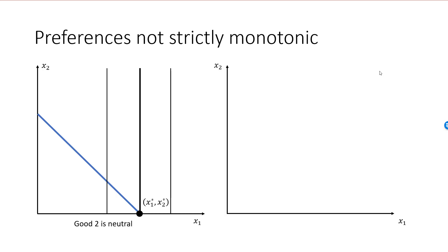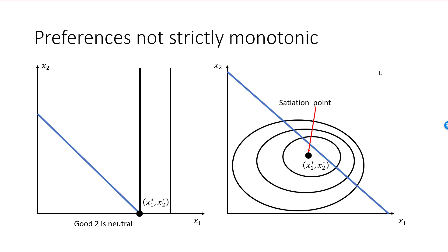In my second example, I have a satiation point, and preferences are non-monotonic for large quantities. Here is my budget line, here is my satiation point, and here are some indifference curves. In this example, the satiation point is affordable, and it will therefore become our optimal bundle. Any bundle on the budget line will be worse than the satiation bundle. If the satiation bundle is not affordable, then a bundle satisfying the first-order condition will be optimal, as long as both goods are desired and the indifference curve is convex at these quantities.